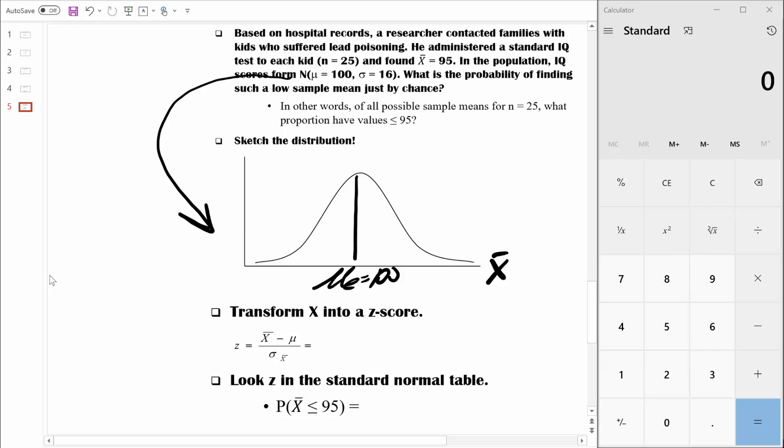In that distribution of sample means, there's obviously some variability. And that variability is measured by the standard error of the mean. Eventually, we're going to take some sample means and we're going to transform them into Z scores. For example, the expected mean of 100 transforms into a Z score of 0. I need to figure out where is a sample mean of 95. 95 is clearly to the left of 100. But where is it exactly? We can transform 95 into a Z score and then figure out exactly where it is.